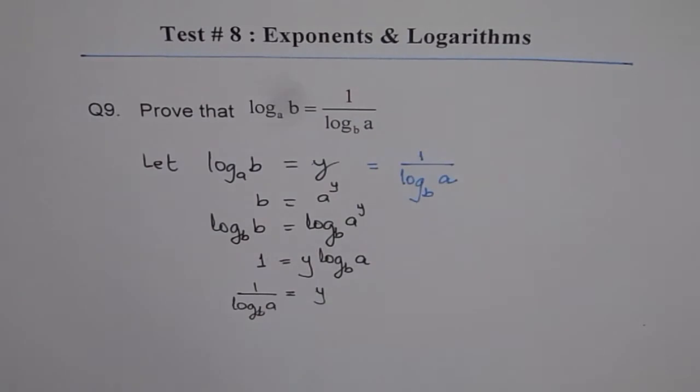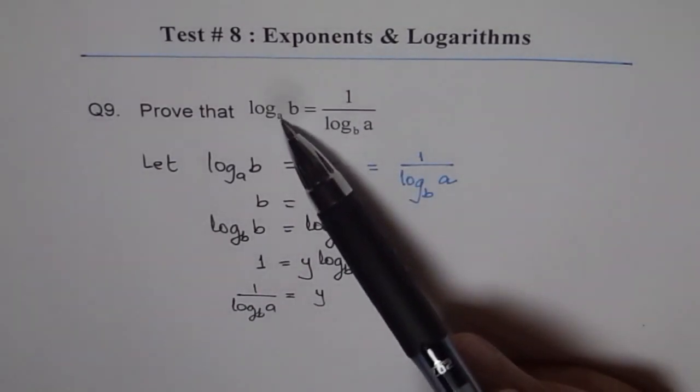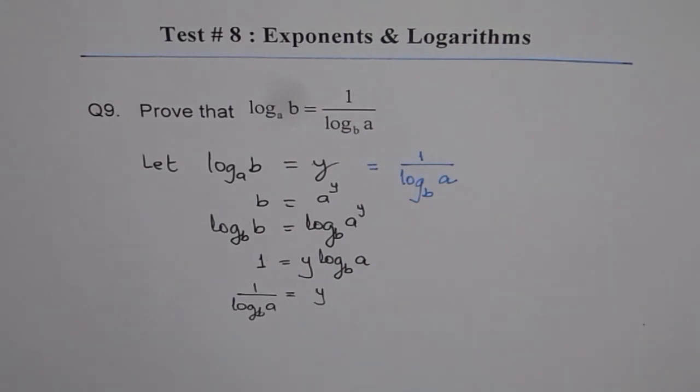So that is how we prove this identity. And this finds huge application in solving so many problems. Remember this: the basis can be flipped with the argument. Log a of b becomes 1 over log b of a.